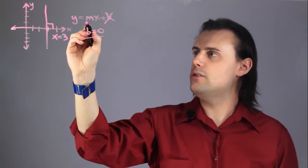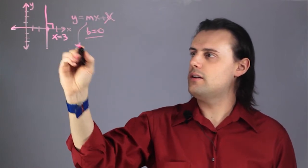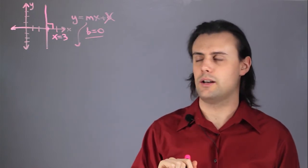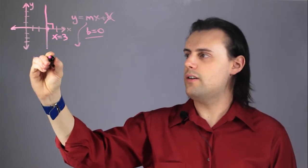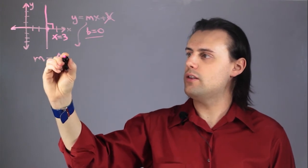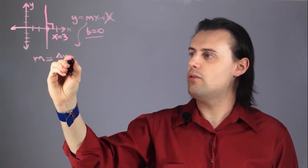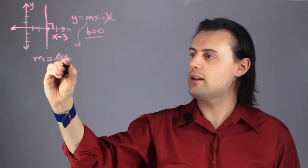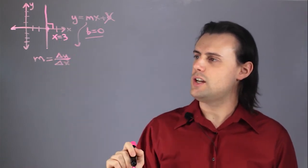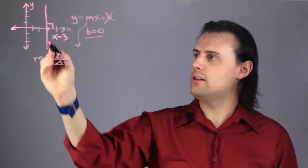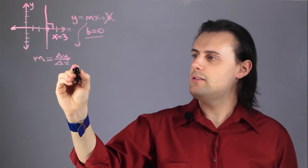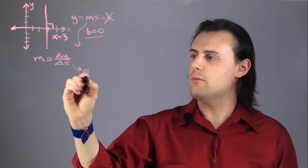Now all we have to do is determine the slope m. m is defined as rise over run, or the change in y divided by the change in x. But because x isn't changing — it's always equal to 3 — that means that the change in x will be equal to 0.